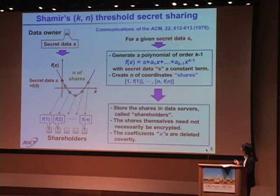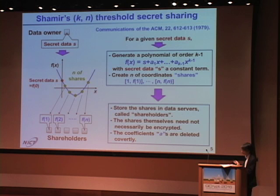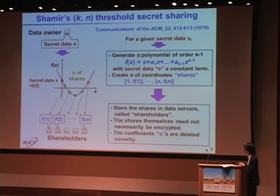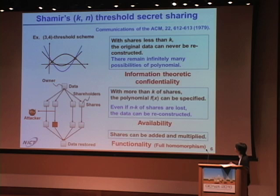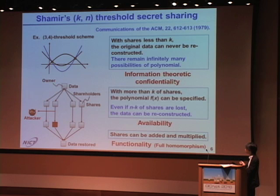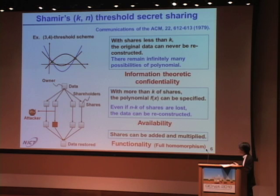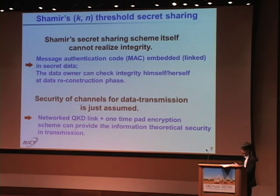Let me briefly introduce Shamir's K-N threshold scheme. For a given secret data S, the data owner generates a polynomial of order K minus one. The secret data is the constant term, and the data owner creates N coordinates named shares. Shares are stored in data servers called shareholders, and shares themselves need not necessarily be encrypted. With fewer than K shares, the original data can never be reconstructed, providing information theoretical confidentiality. Even if N minus K shares are lost, the data can be reconstructed, so the scheme has availability. Moreover, shares can be added and multiplied, so functionality is also encoded.